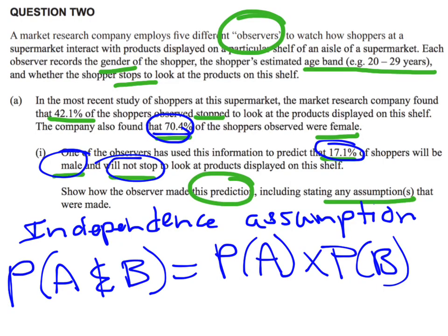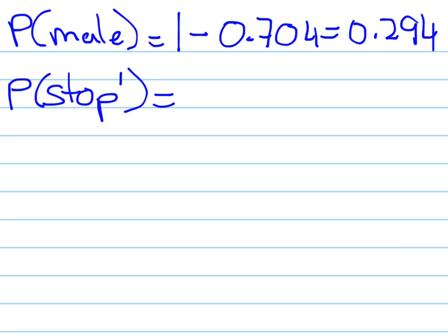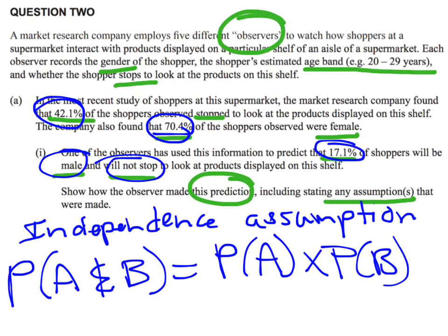Now I'm going to look at the next part. It said will not stop. We were told 42.1% of the shoppers stopped to look. So if I want the probability that they didn't stop, it's going to be 1 minus that number. So 1 minus 0.421, and that's giving me a probability of 0.579. So the probability that somebody did not stop is 57.9%. So I can say I've dealt with the male and not stopping.